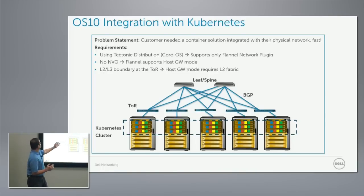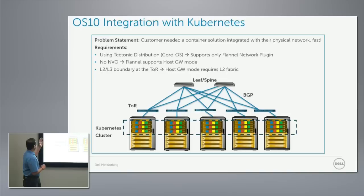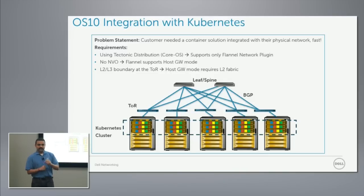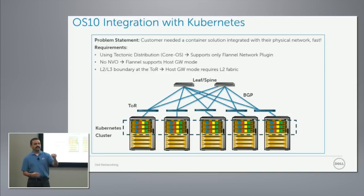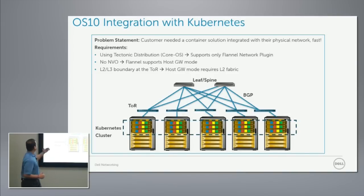That's a good segue into the problem we had with the customer. The customer needed to use a Kubernetes distribution called Tectonic, which only supports the Flannel network plugin. This Flannel plugin has a virtual subnet independent of the physical, continuously assigning subnets with no relationship to the underlay. The customer also didn't want NVO due to performance issues.